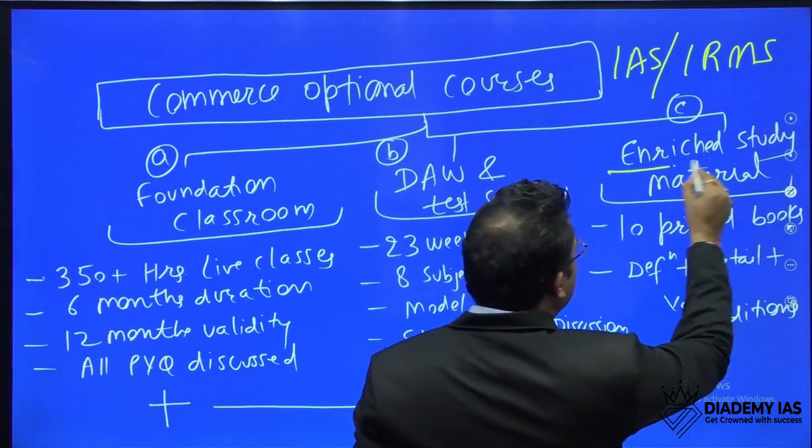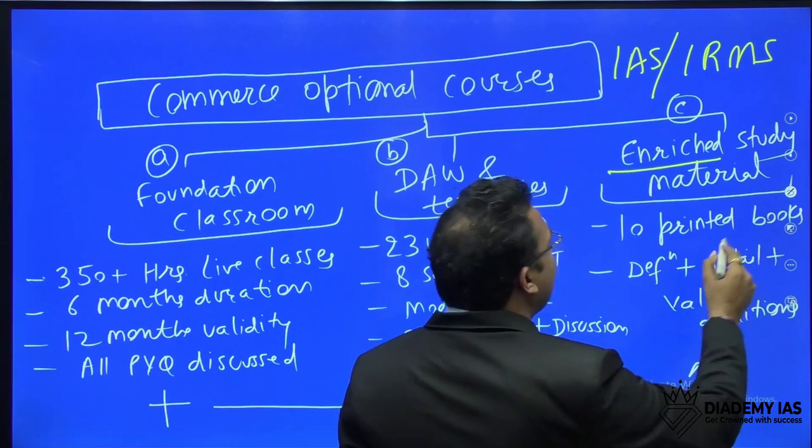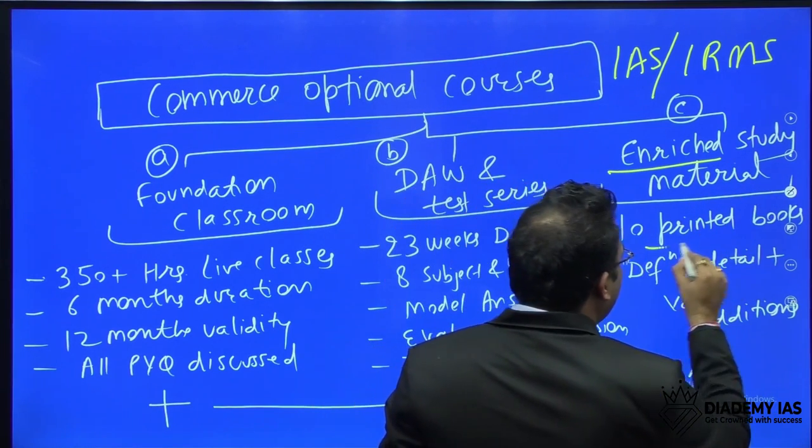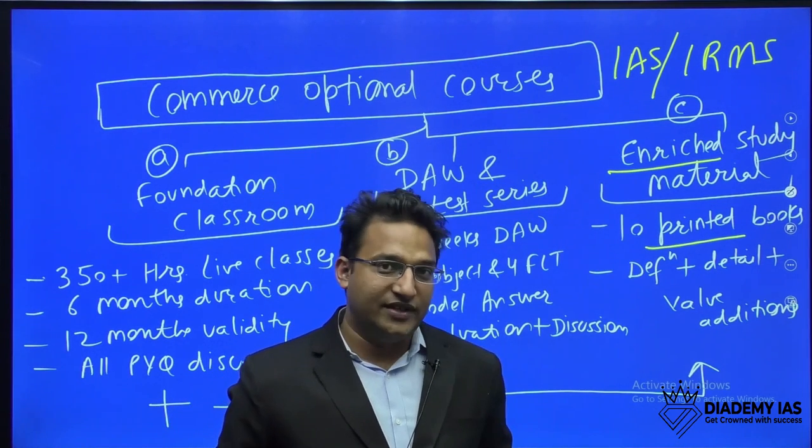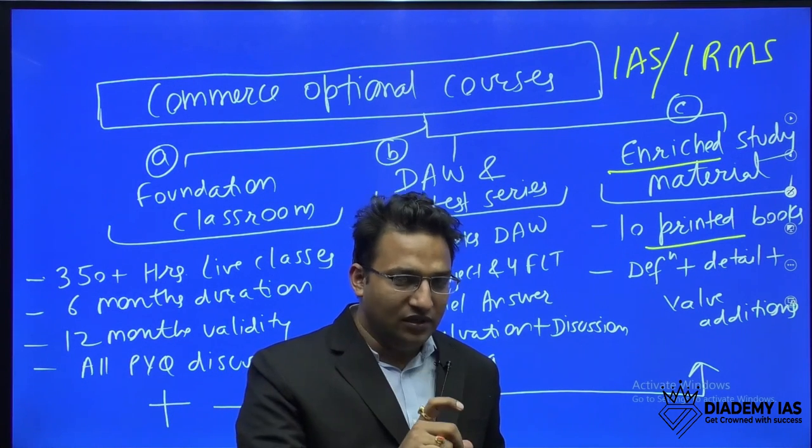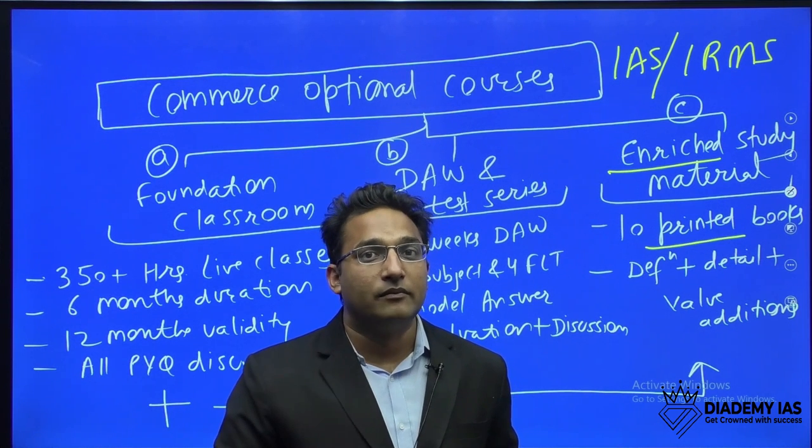This is the Unleashed study material. In this study material, you will get 10 printed booklets, each booklet on one Paper 1 subject. So total six booklets from Paper 1 and four booklets from Paper 2.